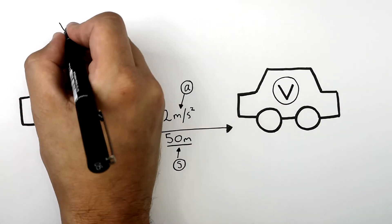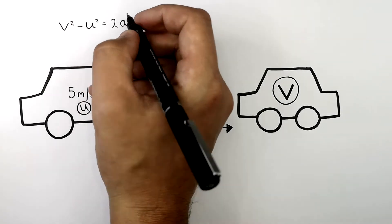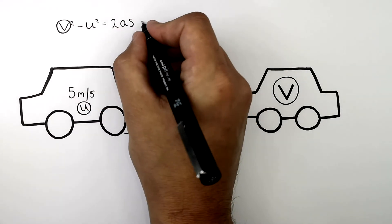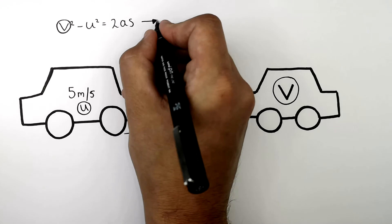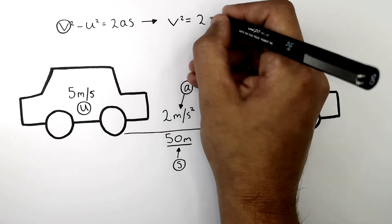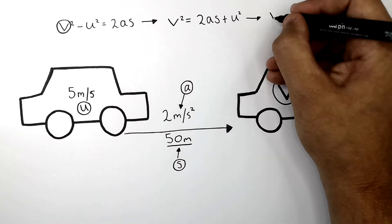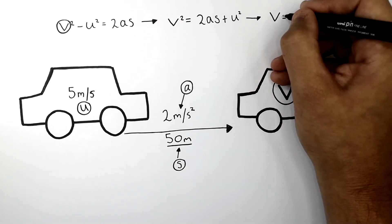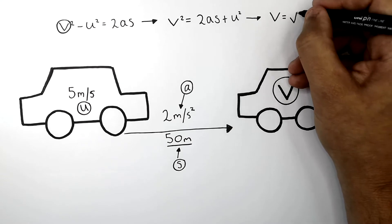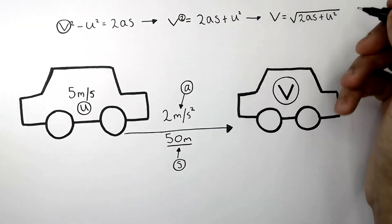Recall the formula: v squared minus u squared equals 2as. We want to rearrange for v, the final velocity. So v squared equals 2as plus u squared. But remember, we want v, not v squared. So v equals the square root of 2as plus u squared.